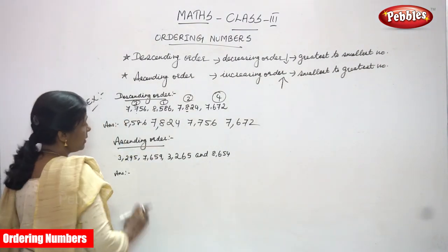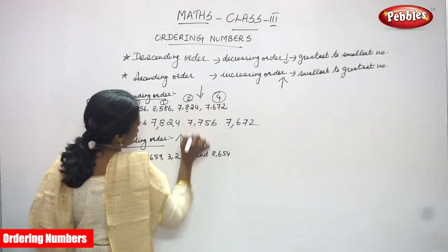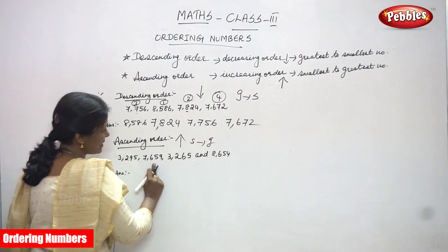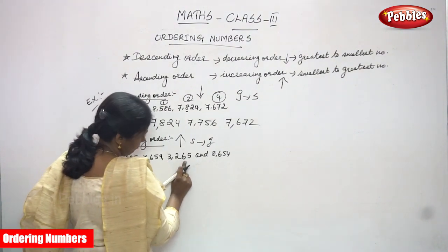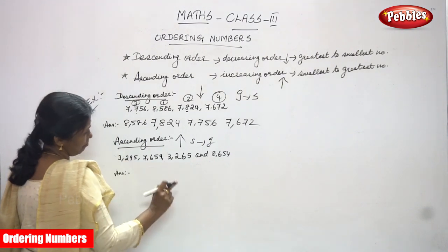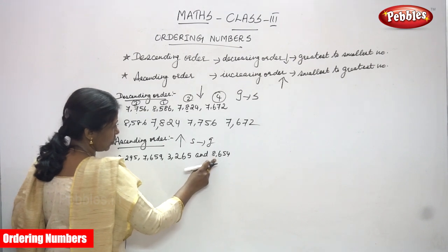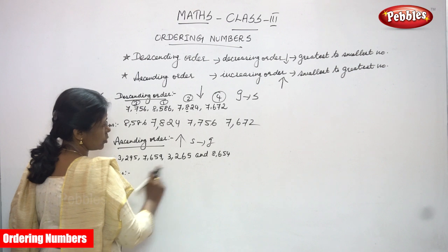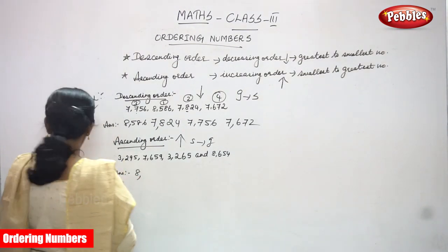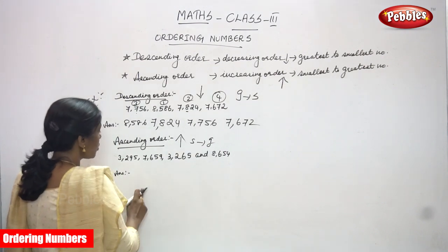Now we are going to see ascending order. Ascending order means we write numbers in increasing order — smallest to greatest. The four numbers for this example are: 3295, 7659, 3265, and 8654. We have to find the smallest number first. Since all are four-digit numbers, we first concentrate on the thousands place.